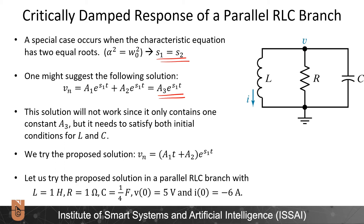So in this case, let us propose the following solution and see whether that works: V natural equals (A1·t + A2) times e to the S1t. Let us try this proposed solution in a parallel circuit branch with L equal to 1 Henry, R equal to 1 ohm, capacitor value equal to 1/4 farads, and initial conditions V(0) equal to 5 volts and I(0) equal to minus 6 amperes.